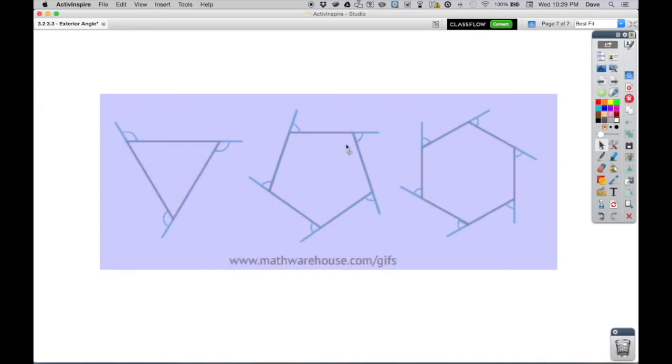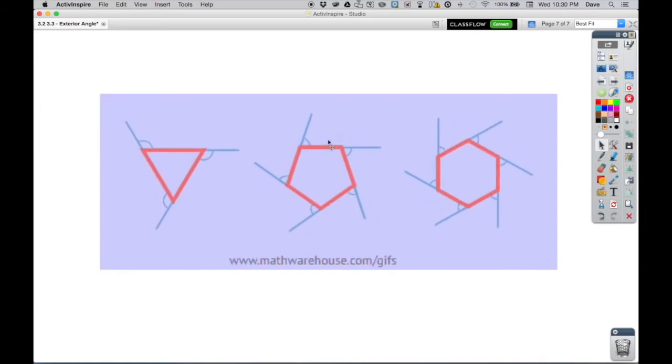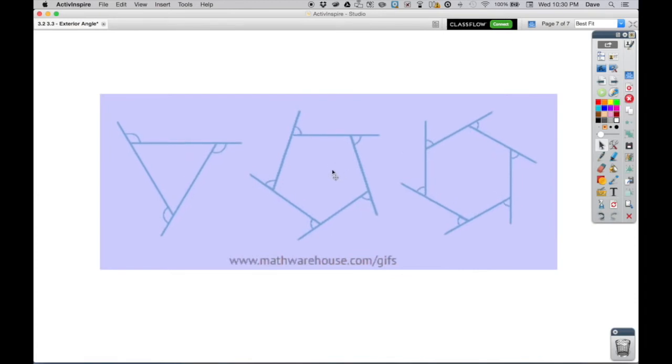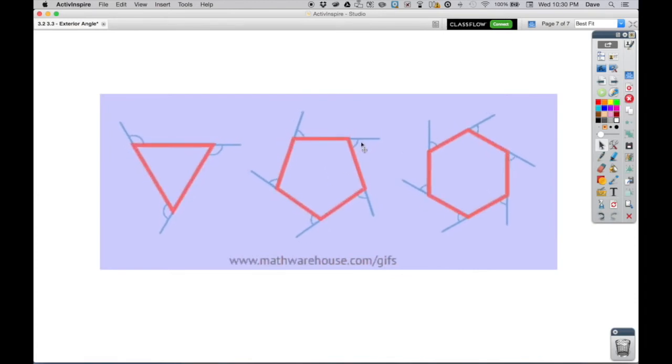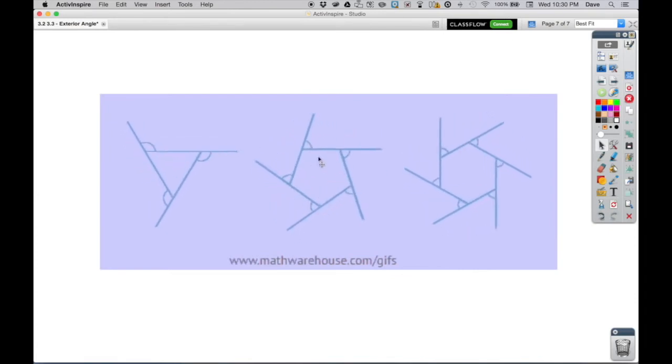Take a look at our pentagon here. Here's the pentagon. Notice how those exterior angles aren't changing. It's just the pentagon's getting smaller, but the angle itself doesn't change. And it adds up to 360.